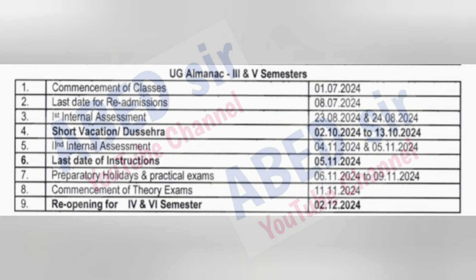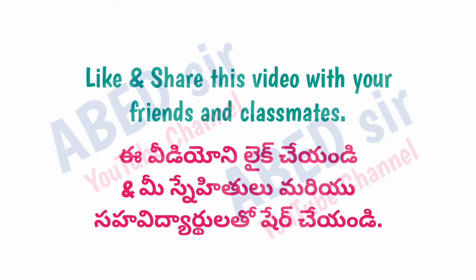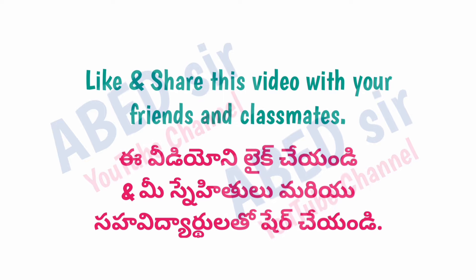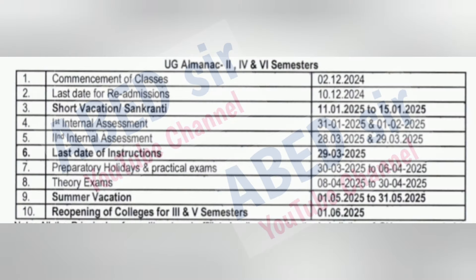On screen you can see the second, fourth, and sixth semester academic schedule for the academic year 2024 and 2025. Complete details with dates you can see — classes starting date, internal, practical, holidays, and semester exam date.